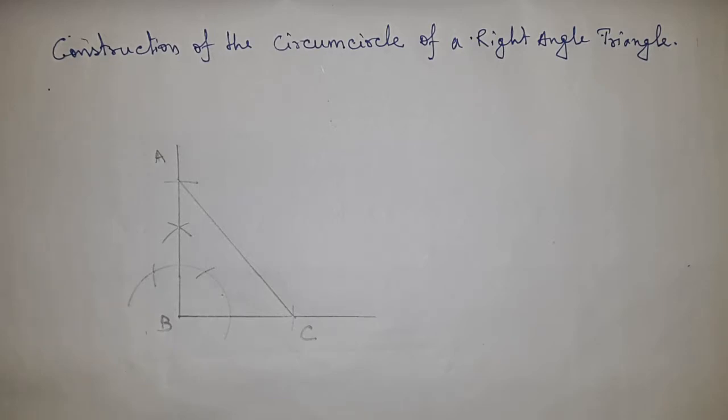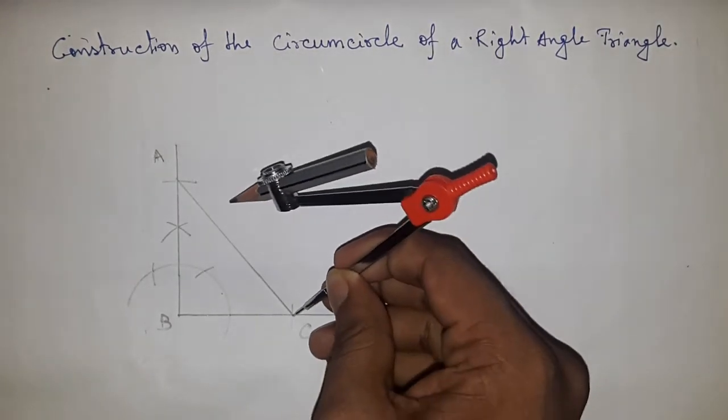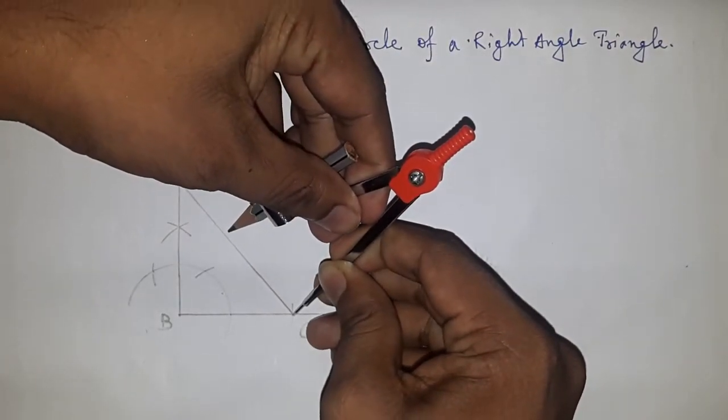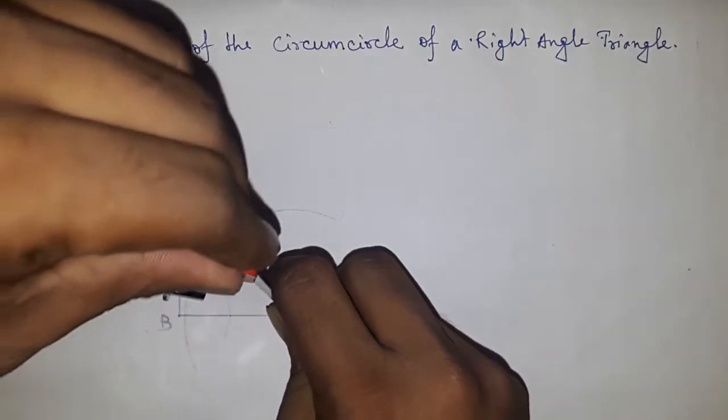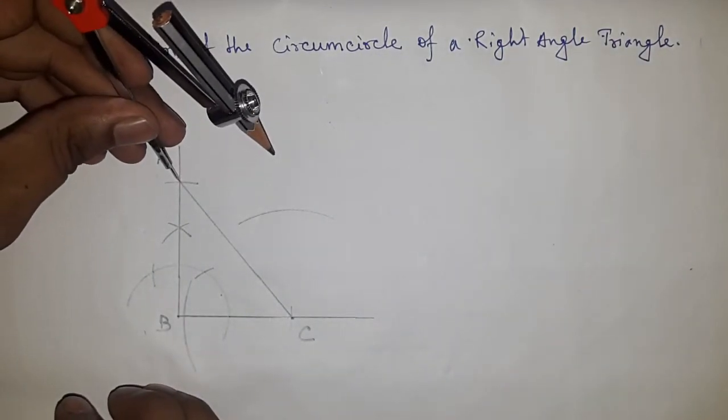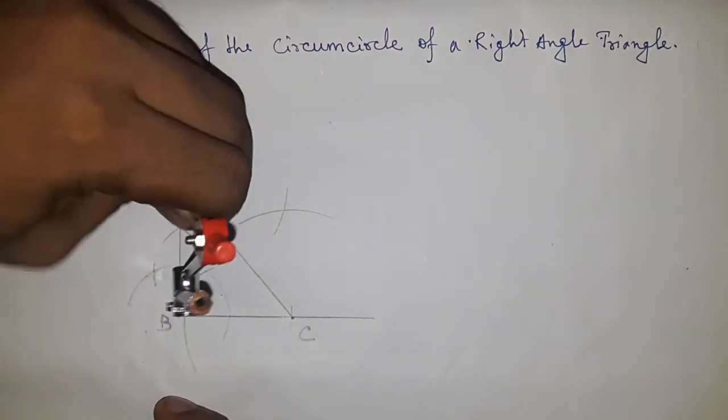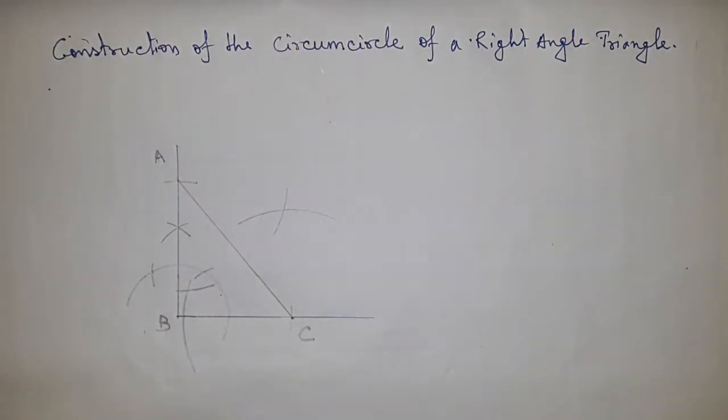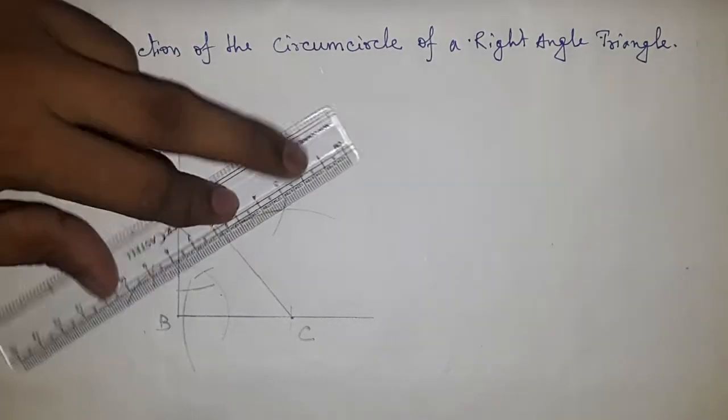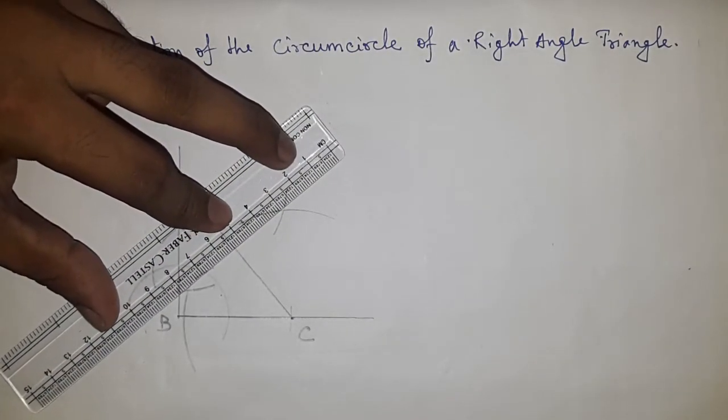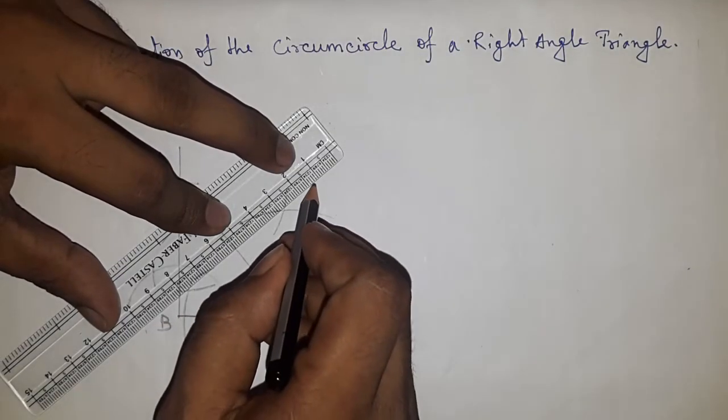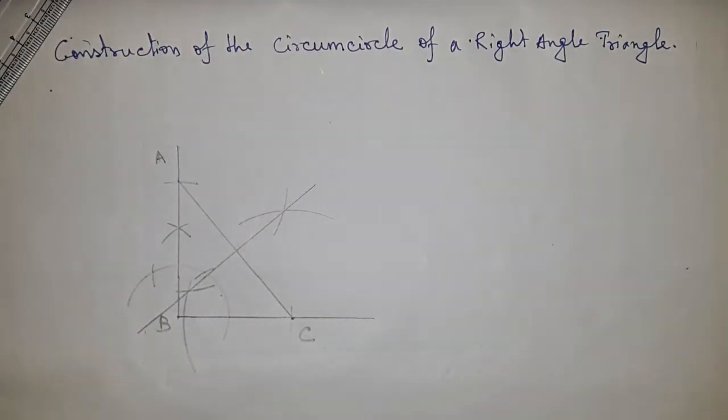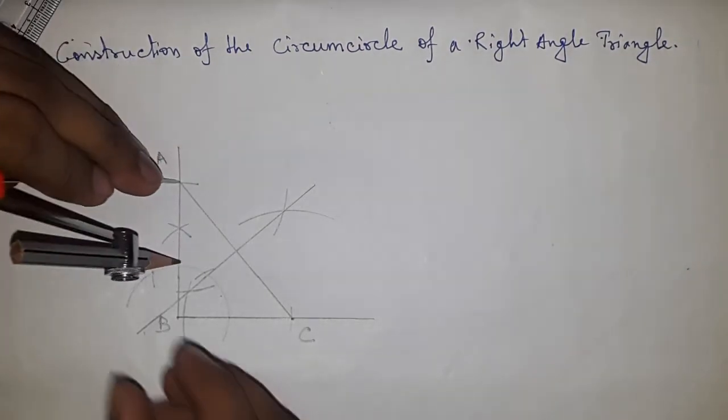So we get ABC, a right angle triangle. By setting the hypotenuse, taking length more than half of the hypotenuse and drawing arc, again drawing arc which cut at two point. Now joining this two point to get the bisector of the hypotenuse AC. Again bisecting another side of the right angle triangle.